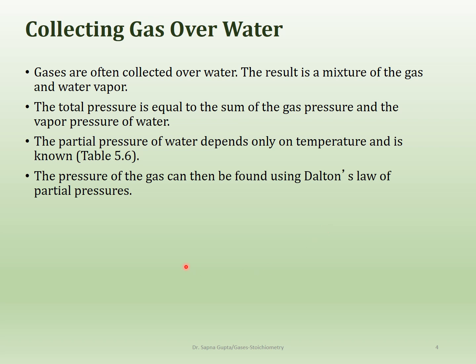When you collect gas over water, the gas will actually displace the water, and then you can measure how much gas is involved. When such a reaction takes place and you're displacing the water, the gas pressure you end up getting is not just the gas pressure, but also the vapor pressure of water. So in order to find the pressure exerted just by the gas, you need to subtract the vapor pressure of water.